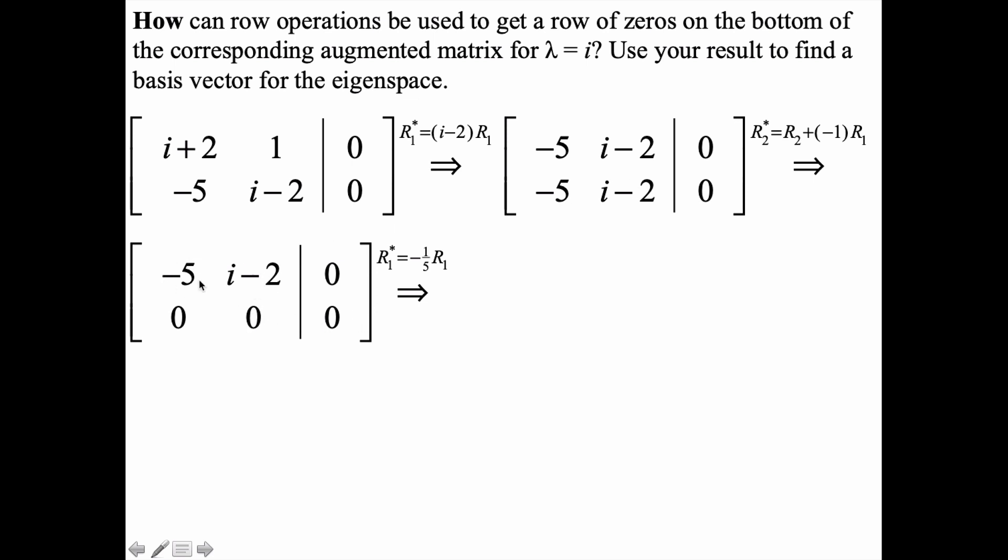I'd like to get a leading 1 in the upper left-hand corner. The new row 1, r sub 1 star, will simply be negative 1 fifth times the first row that was already there. That results in this matrix, or this linear system.